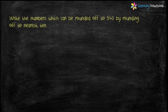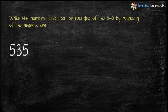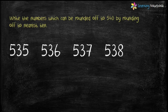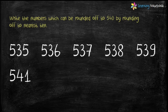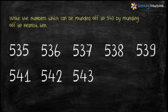Now let's do a different question: write the numbers which can be rounded off to 540 by rounding off to the nearest ten. We have to find the numbers using Step 1 and Step 2 which can be rounded off to 540. As per Step 2, the smallest number is 535, then 536, 537, 538, and 539. According to Step 1, the next numbers are 540, 541, 542, 543, and 544. These are all the numbers which can be rounded off to 540.